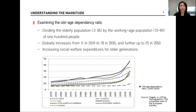We can better understand the magnitude of the situation by examining the old age dependency ratio, which is measured by dividing the elderly population by the working age population of 100 people. As you can see in the figure, this dependency ratio is projected to increase incrementally worldwide. The United Nations projects that the old age dependency ratio will increase globally from 11 in 2010 to 18 in 2030 and further up to 25 in 2050. Such a sharp increase can become an urgent social problem because it shifts the great financial burden of increasing social welfare expenditures for older generations onto the younger generations.